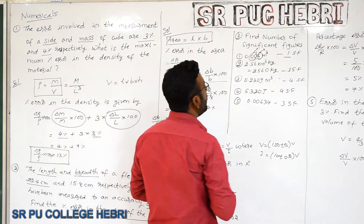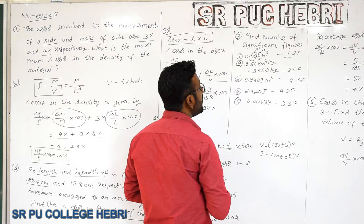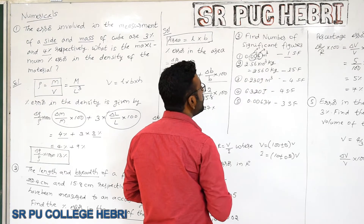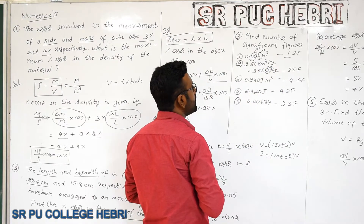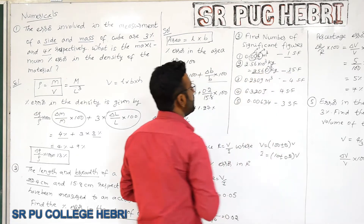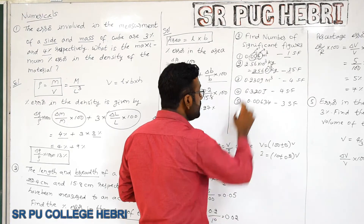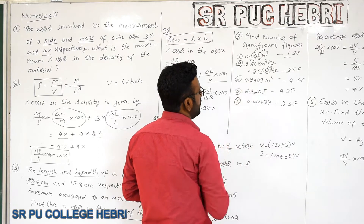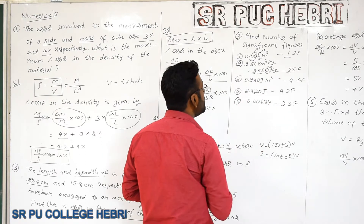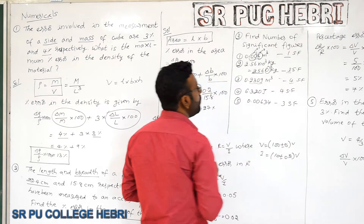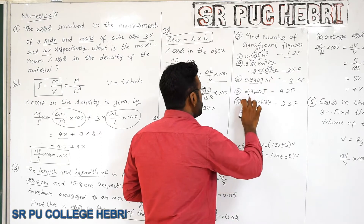Next: 2.56 × 10³ kg, which can be written as 2560 kg. It is a four-digit number but the trailing zero is not counted, so there are three significant figures. Next: 0.2309 — after the decimal point there are four digits, and the zero between two non-zero digits is counted, giving four significant figures.